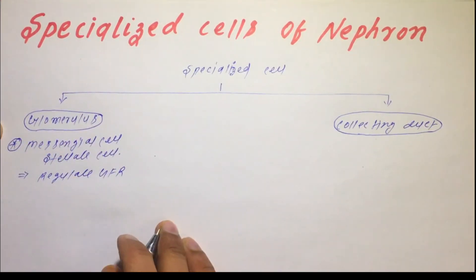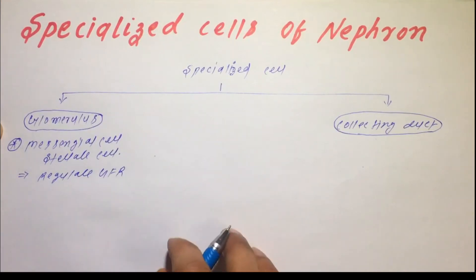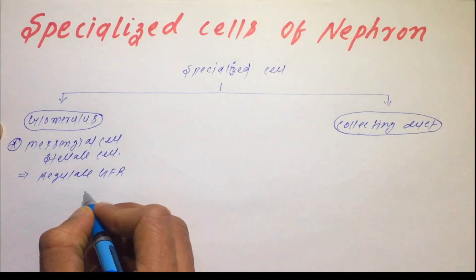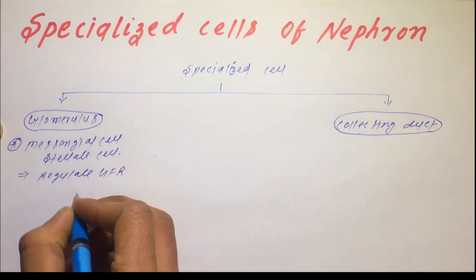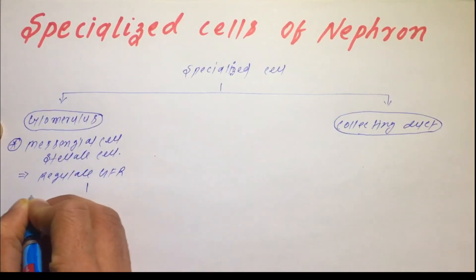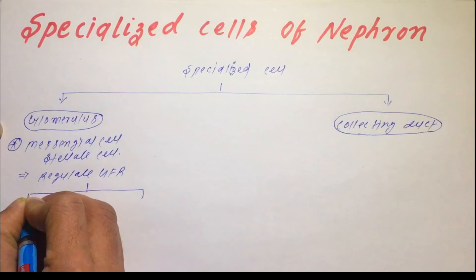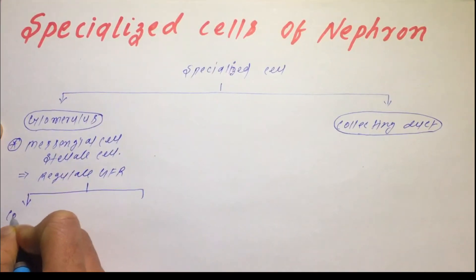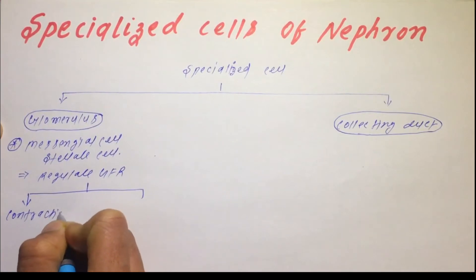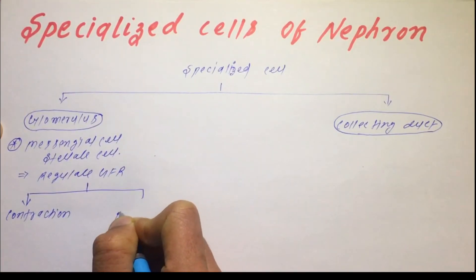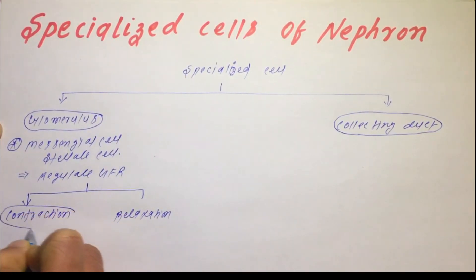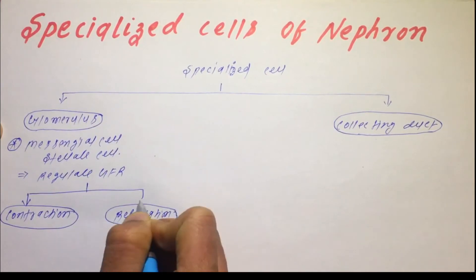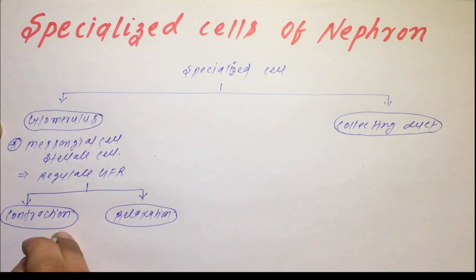The mesangial cell has two properties: it can either contract or relax. So we can divide the behavior of the mesangial cell on the basis of contraction and relaxation.